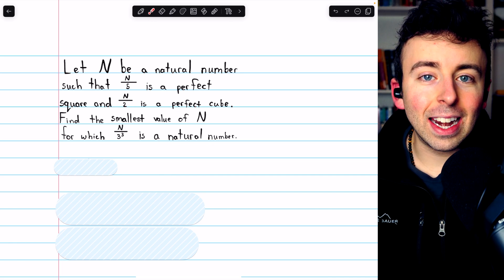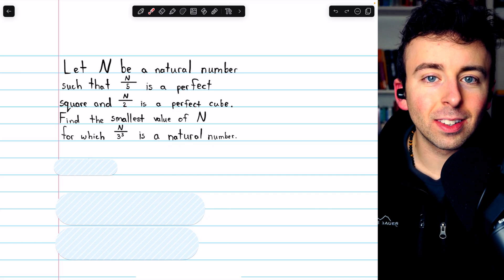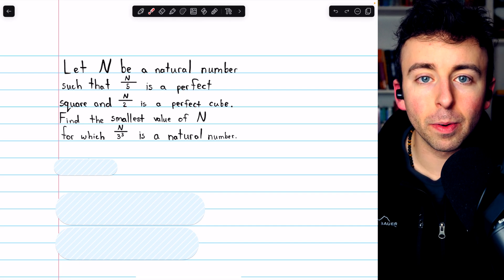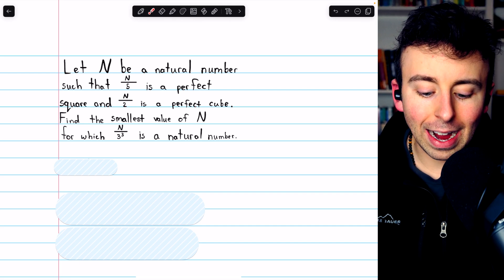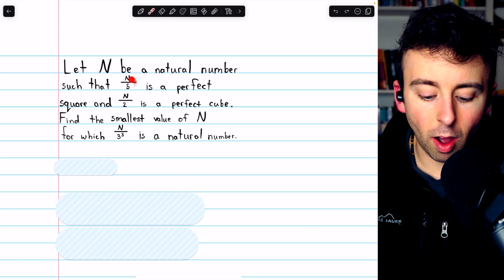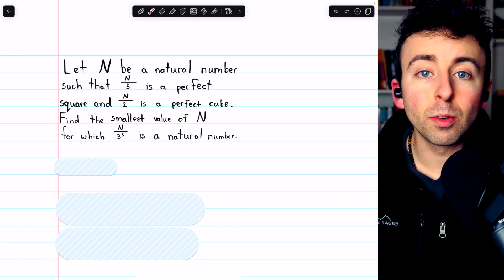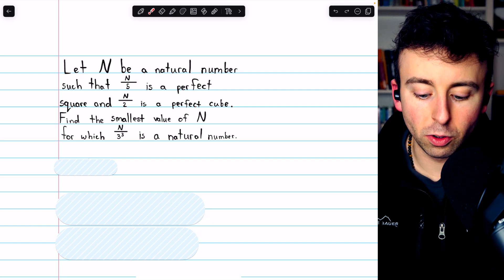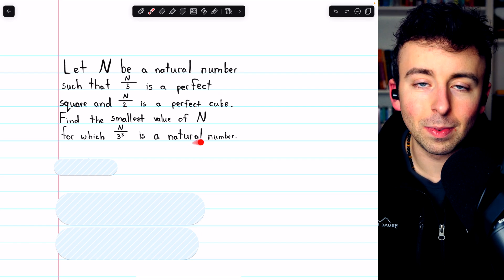So we know that N has a unique prime factorization, like any good natural number, and we know that it must have a factor of 5, a factor of 2, and a factor of 3, since all of these divisions must result in positive integers, perfect squares, cubes, and natural numbers.